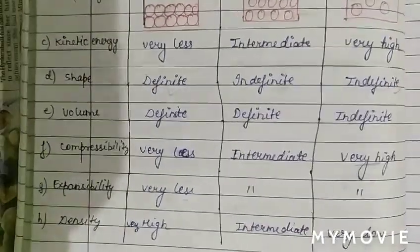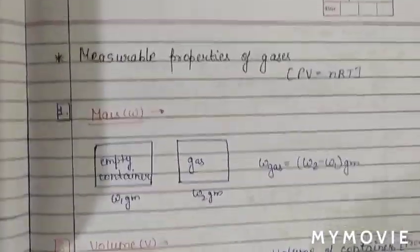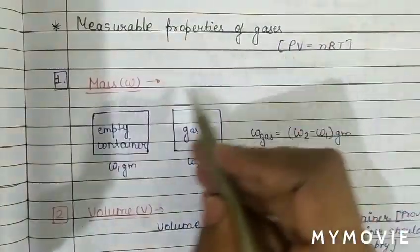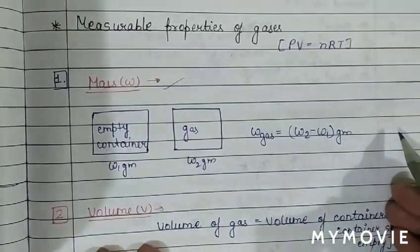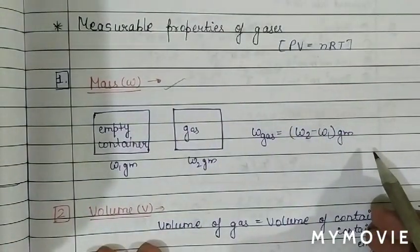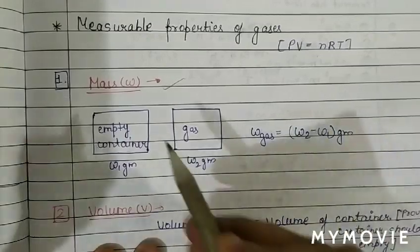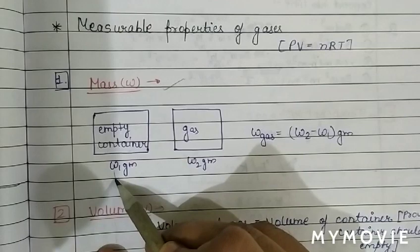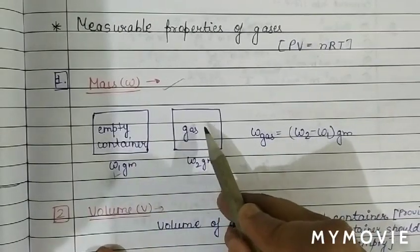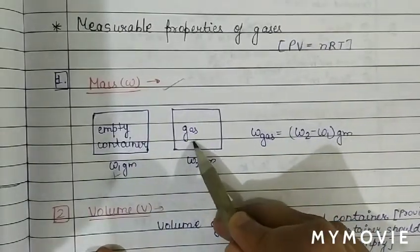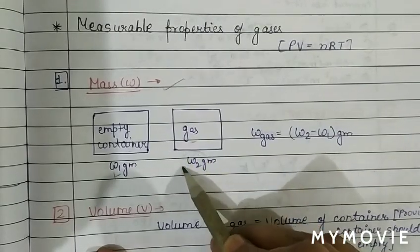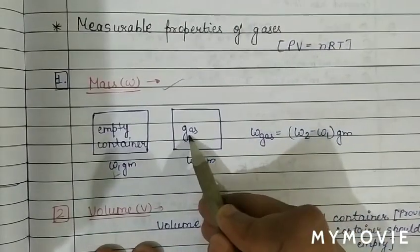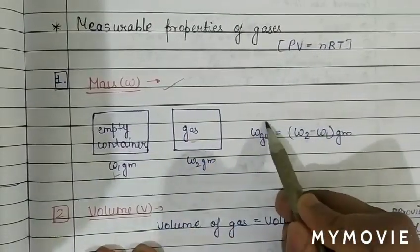Now we discuss some measurable properties of a gas. The first measurable property is mass. We can find the mass of a gas by weighing an empty container (weight W1), then filling it with gas and weighing again (weight W2). The mass of gas is W2 minus W1.